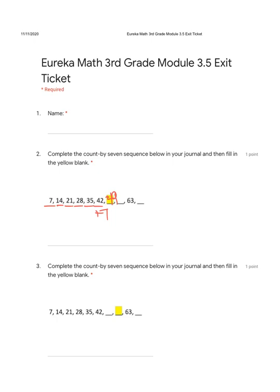In the next problem, we are finding the next blank. Again, we're adding seven each time: seven, fourteen, twenty-one, twenty-eight, thirty-five, forty-two, forty-nine. Now let's add seven. Forty-nine plus seven is fifty-six.